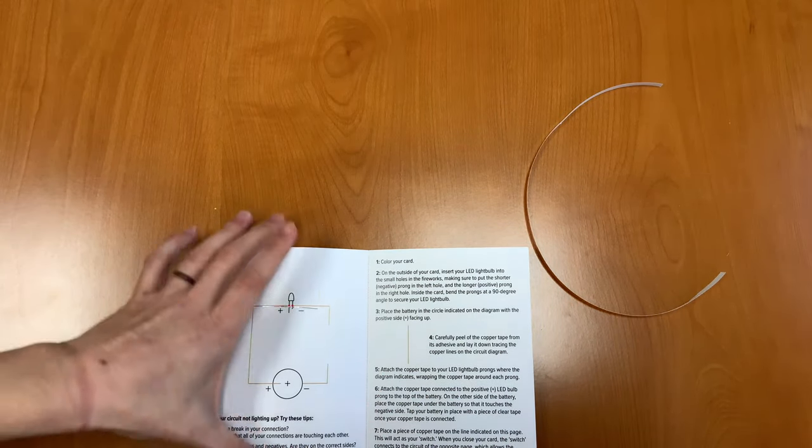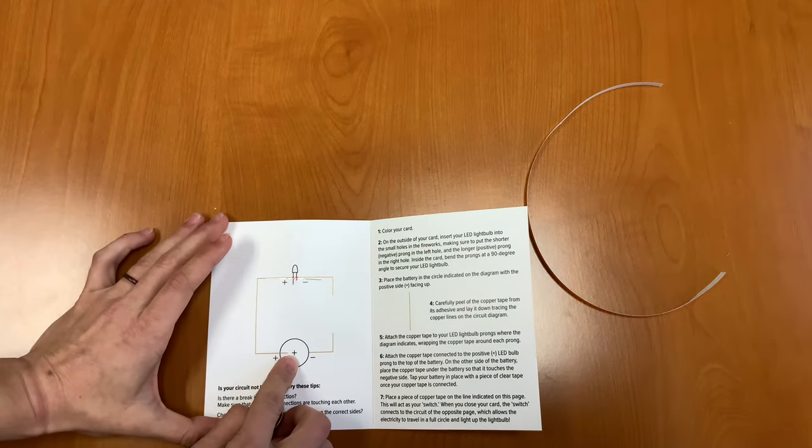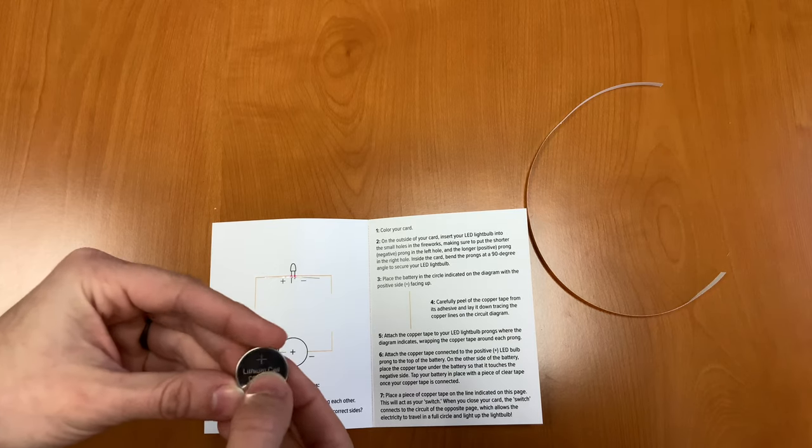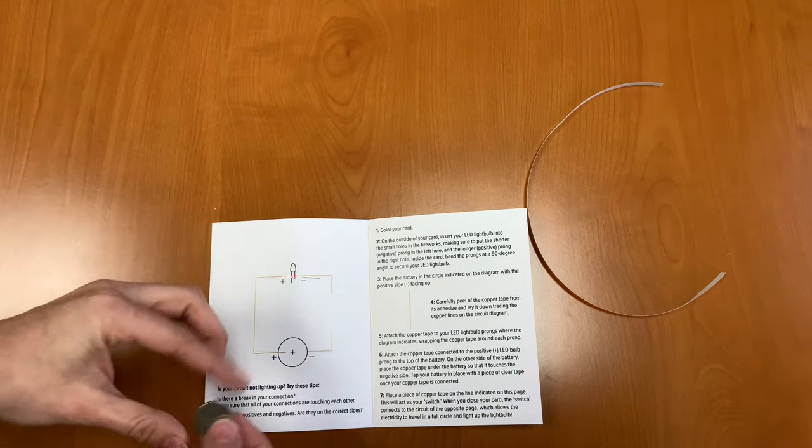Our next step is to place our battery in the circle indicated on the diagram with the positive side facing up. So the positive side is the side that's going to have a plus symbol on it. So that will be facing up.